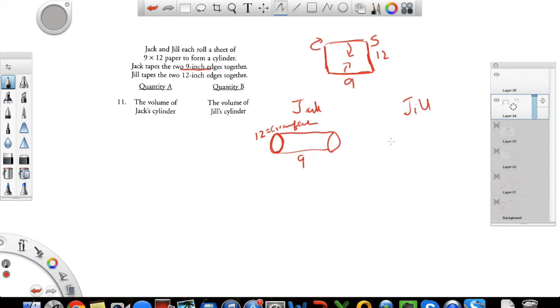In Jill's case, it's flipped. So your height is 12 and your circumference is 9.